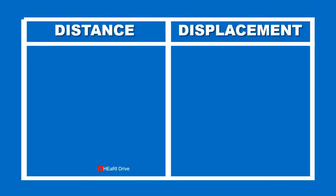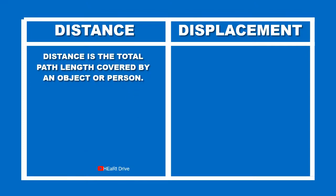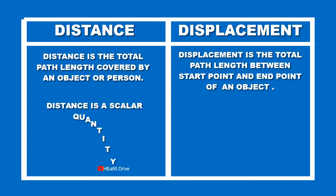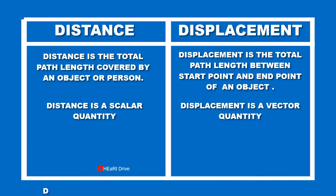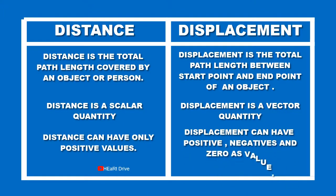Let's tabulate the difference between distance and displacement. Distance is the total path length covered by an object or person; displacement is the total path length between the start point and end point. Distance is a scalar quantity; displacement is a vector quantity. Distance can have only positive values; displacement can have positive values, negative values, and zero.